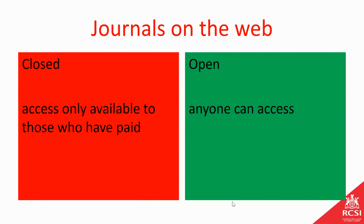It really divides into two categories. There is free and open stuff available on the web, and there are different categories of that which I'll chat through. But then there is an awful lot of material still available on the web but only available to those people who have paid to access it — either by buying a copy of the journal online or if their library bought a subscription.